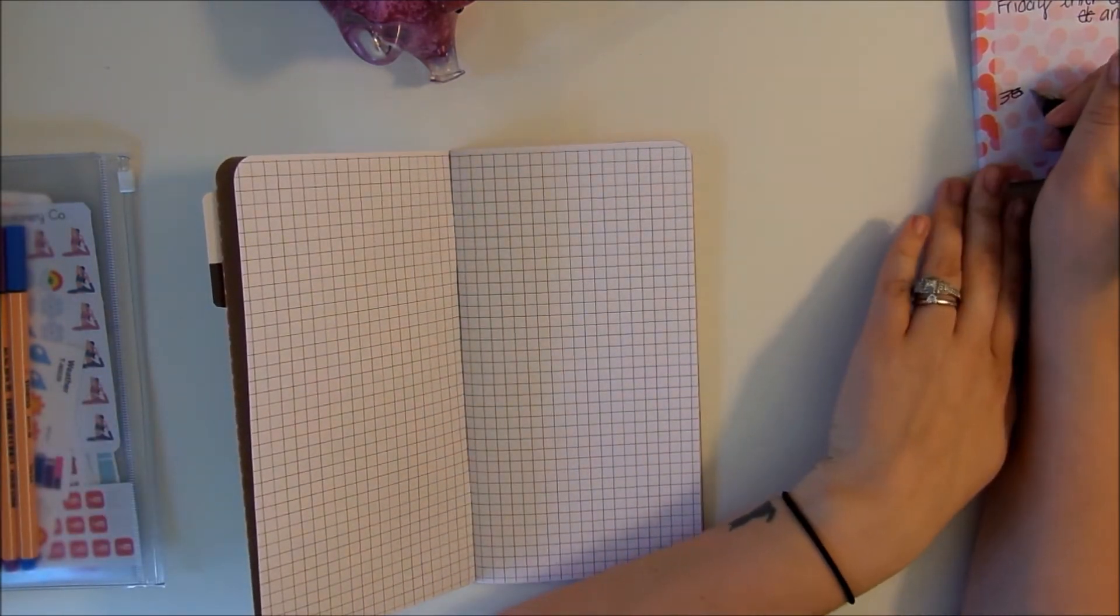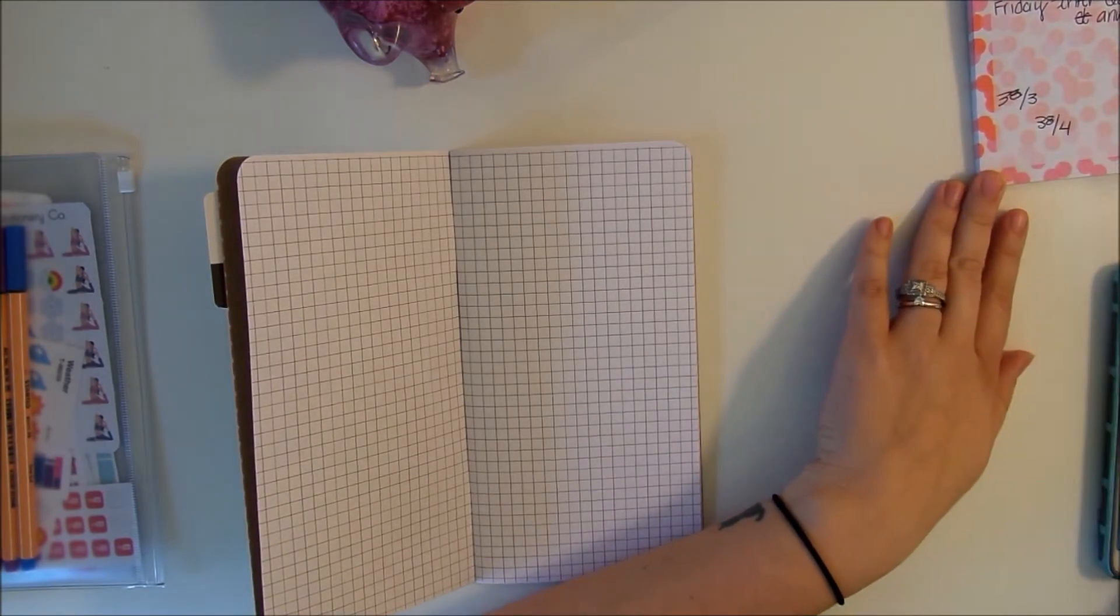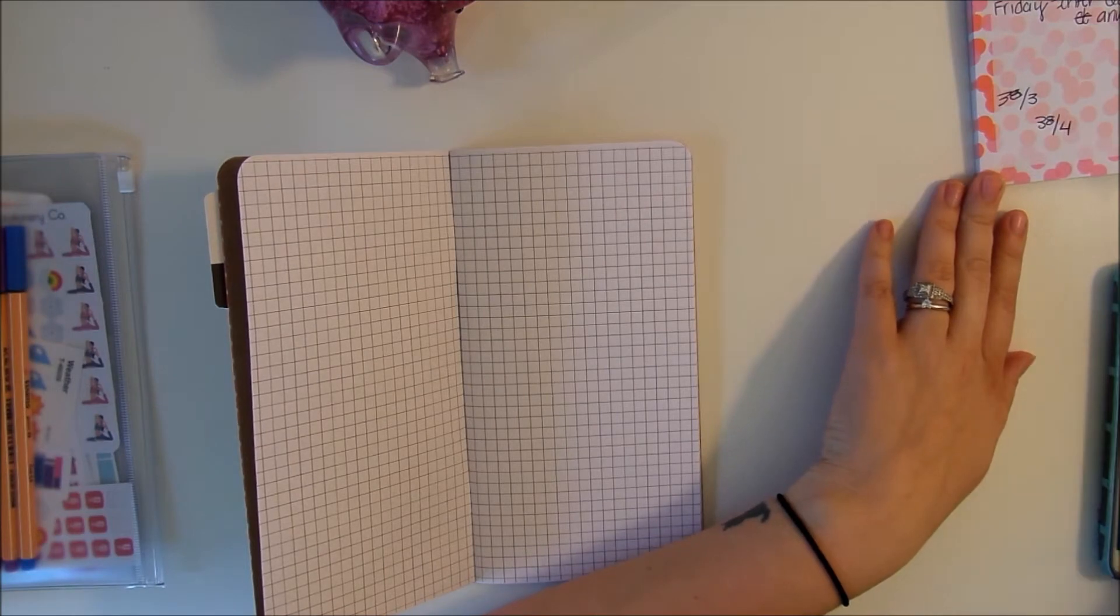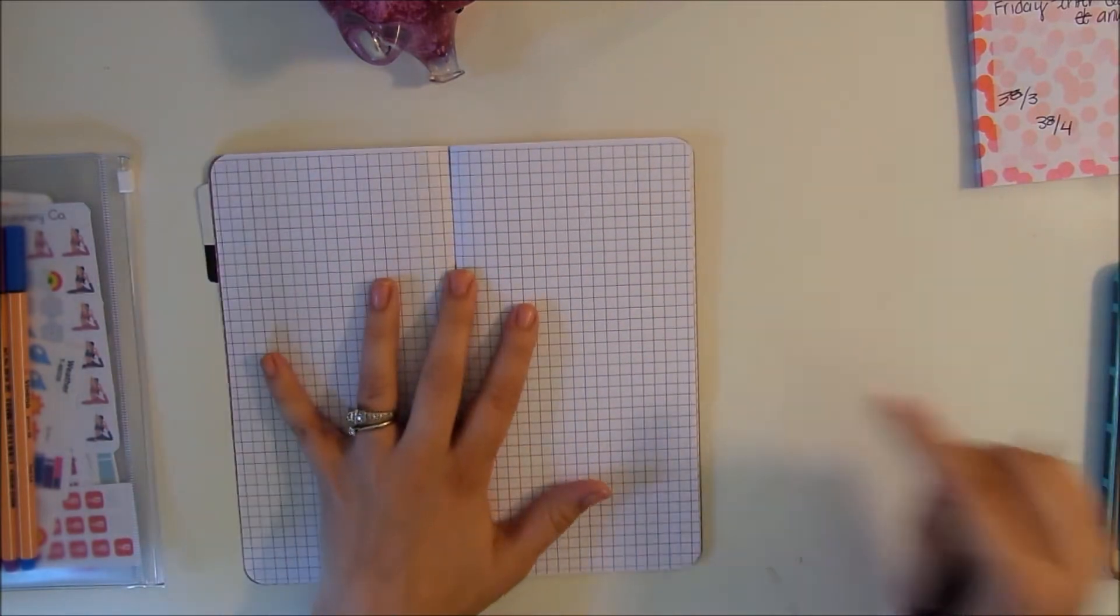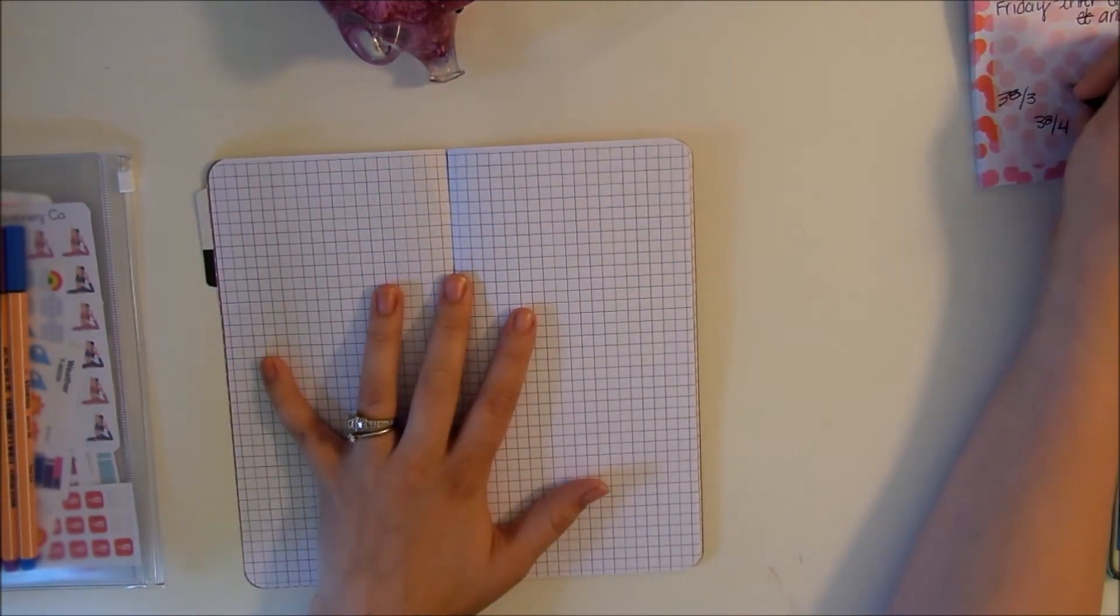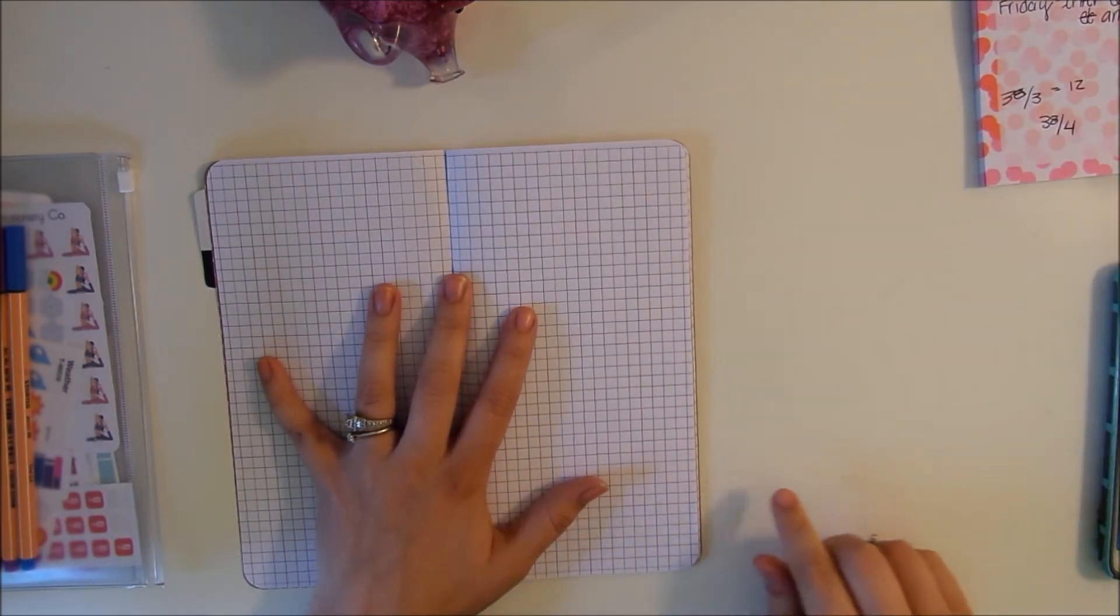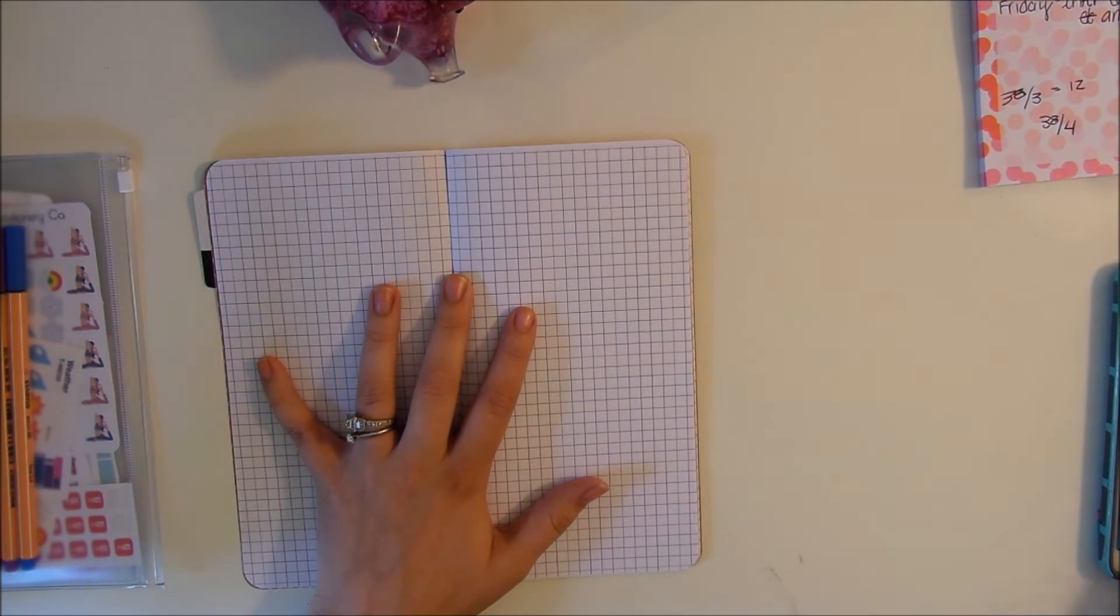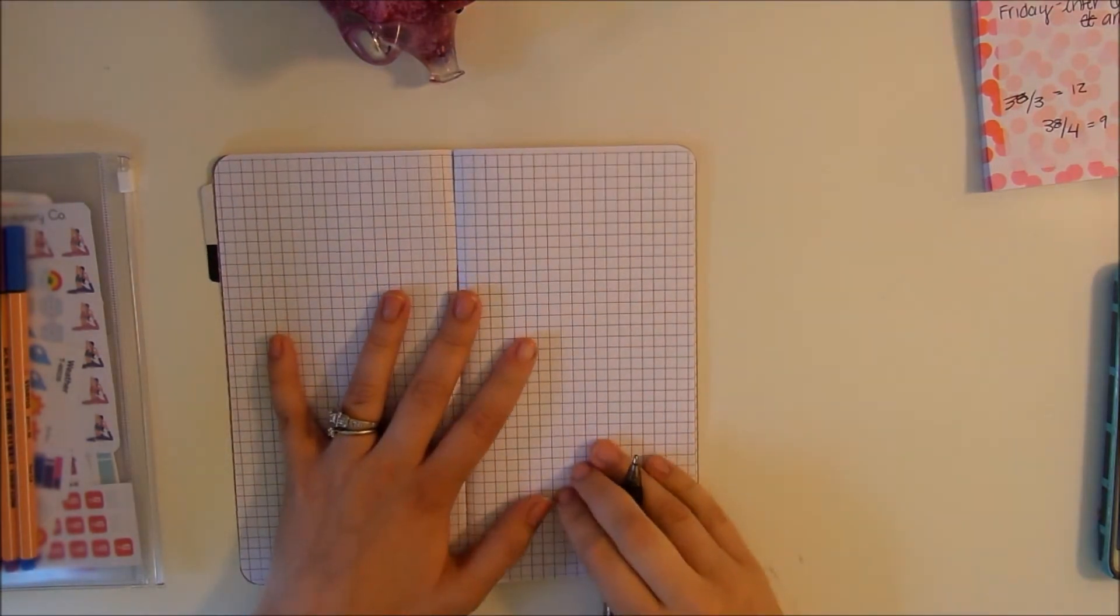There are 38 squares, so this side is going to have Monday through Wednesday and this side is going to have Thursday through Sunday. We're going to do 38 divided by three and 38 divided by four. Each box can have, or this side can have 12, it's a little bit more than 12 but one day will just have a few extra lines. The other side will have nine per day.